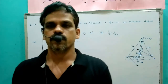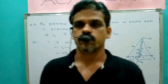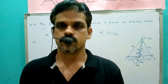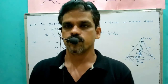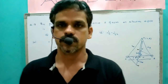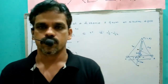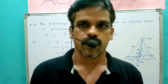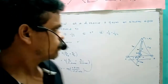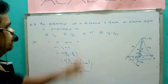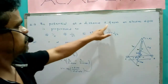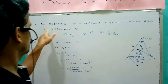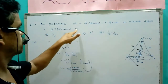Welcome to Smart Academy. We are giving HCU-MAC Physics 2018 questions with solutions. Now I have one question here: the potential at a distance R from an electric dipole is proportional to?